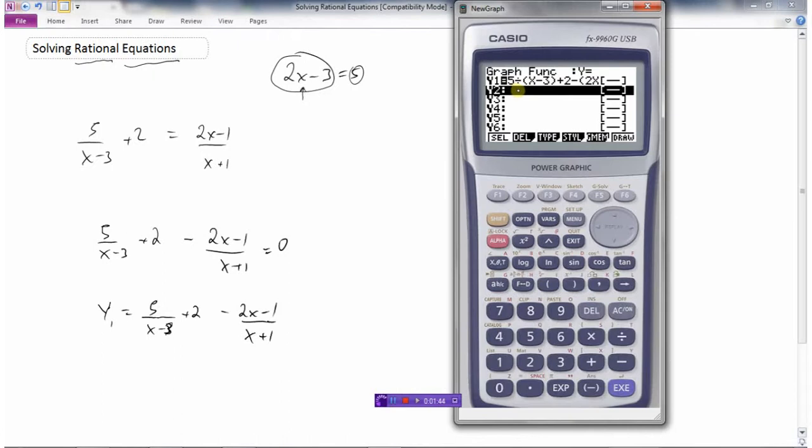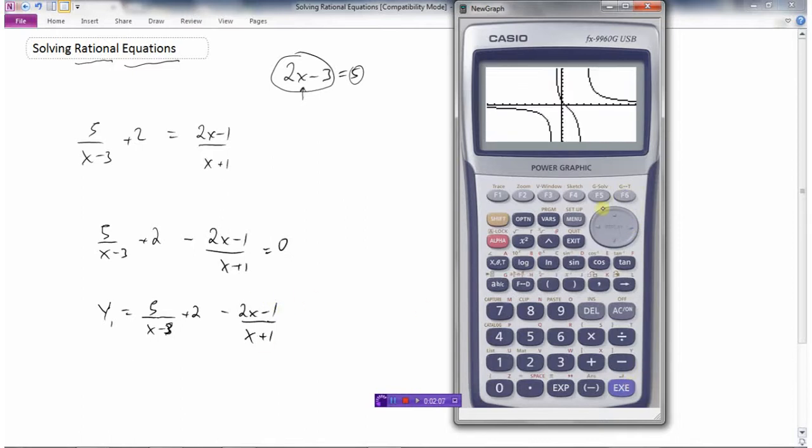I've already entered this in my calculator, so I've got 5 divided by x minus 3 plus 2 minus 2x minus 1 divided by x plus 1. So I've entered that function in the calculator, and here I have the graph drawn.